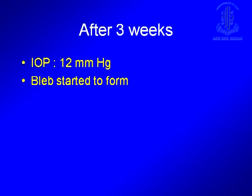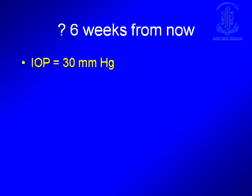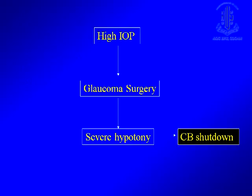After three weeks of therapy, his intraocular pressure was 12 mmHg and the bleb started to elevate. We are fortunate here because what typically happens in this situation is another six weeks from now his pressure will be 30 and we will be struggling to control it. What typically happens in these eyes is: you have a high IOP, you do the glaucoma surgery, you have severe hypotony — with severe hypotony there is no excess flow through the bleb, leading to ciliary body shutdown, and the bleb doesn't function. You have to make sure that even in a uveitic eye, inflammation is well controlled preoperatively and adequate inflammation control is maintained postoperatively.